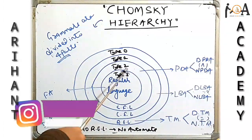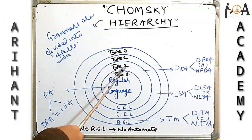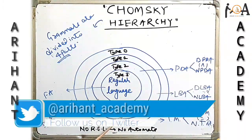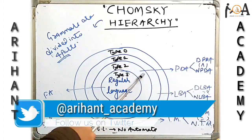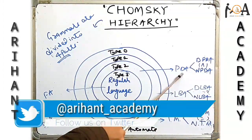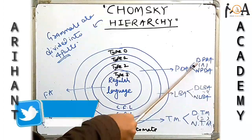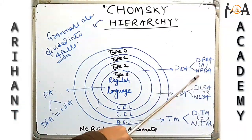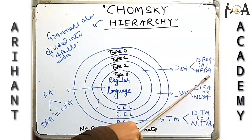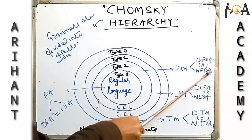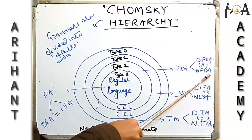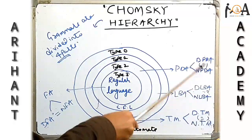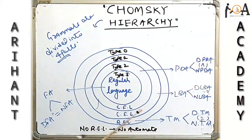Type 2 grammar is context free language. Context free language grammar is recognized by PDA, that is Pushdown Automata. It is also of two types: deterministic and non-deterministic pushdown automata. The power of NPDA, that is non-deterministic pushdown automata, is greater than deterministic pushdown automata.